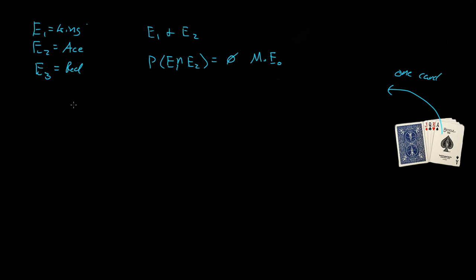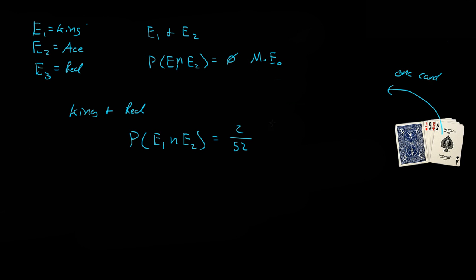Now what about getting a king and a red card? What's the probability of Event 1 intersecting Event 3? What's the probability of getting a king and a red card? Well, there are two red kings in the deck out of the 52 cards. And that is not equal to null. So that is not mutually exclusive.